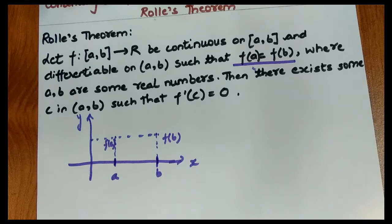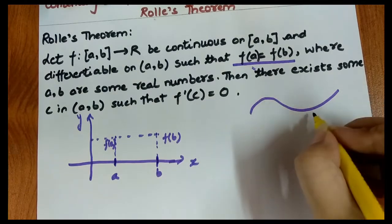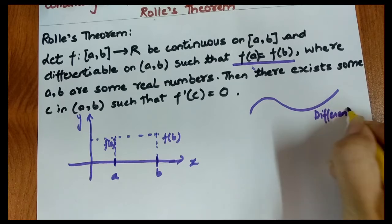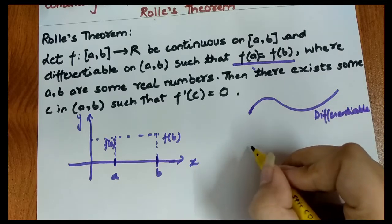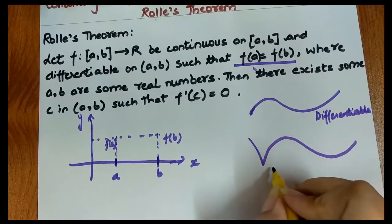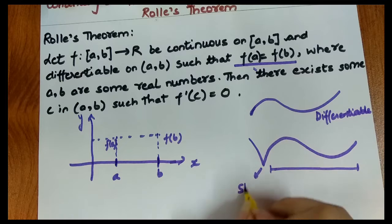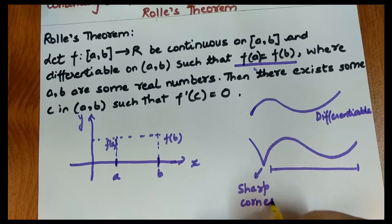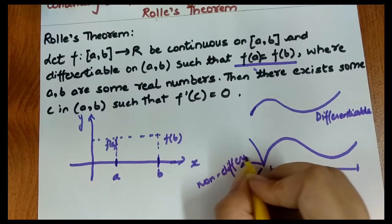Continuity means there is no break point in the graph. For differentiability, we study LHD and RHD. From a graph perspective, a graph is non-differentiable at any sharp corner. When a sharp corner appears, that point is non-differentiable.